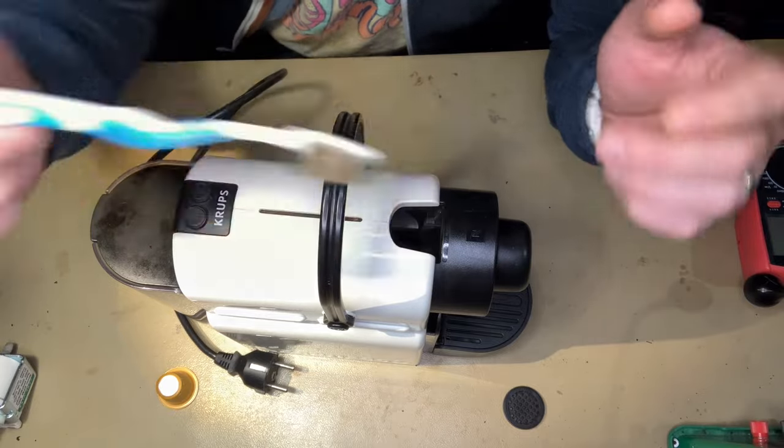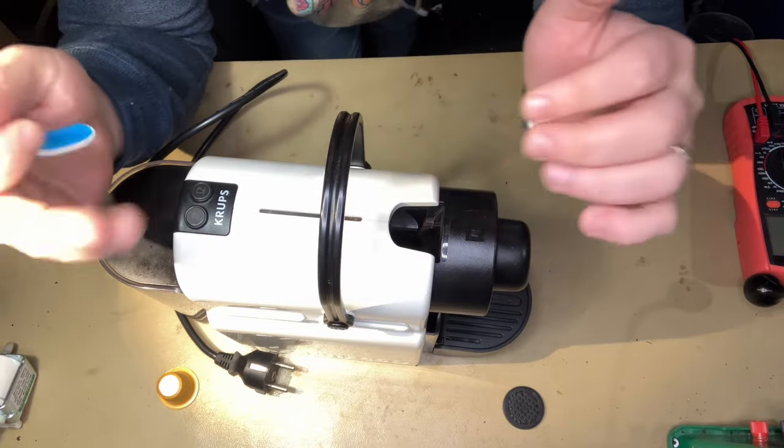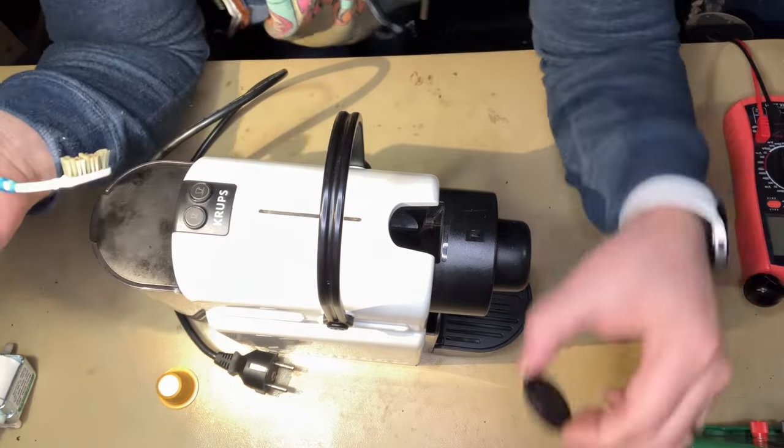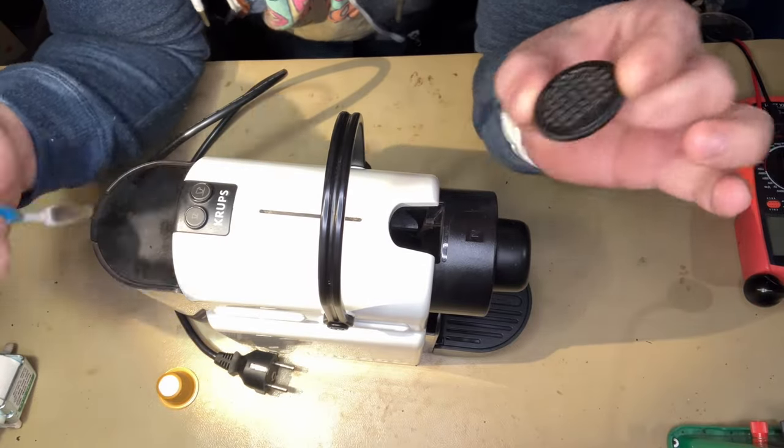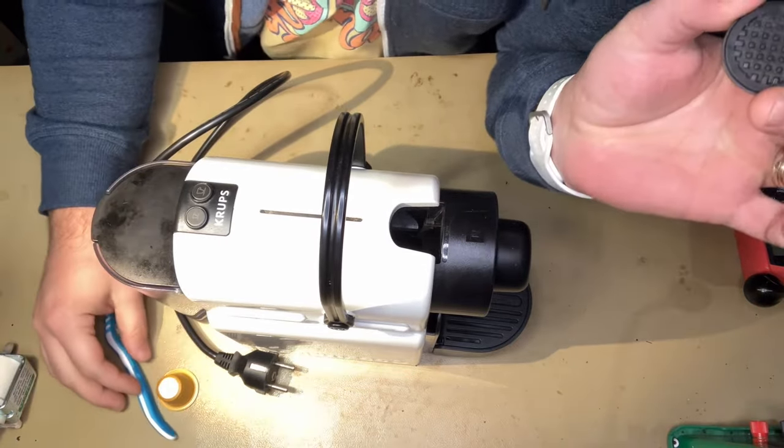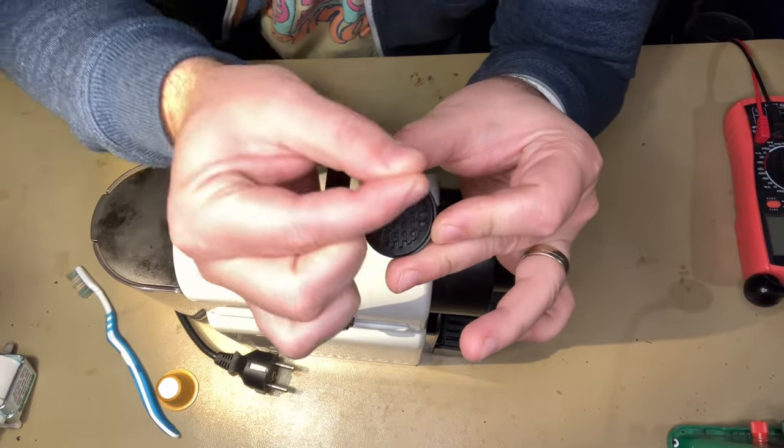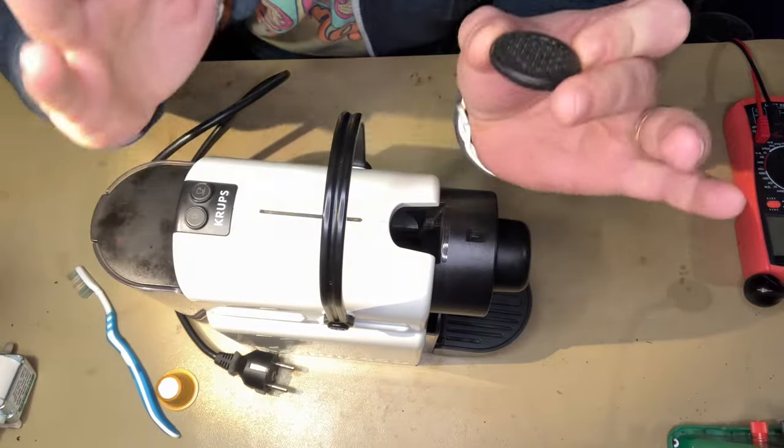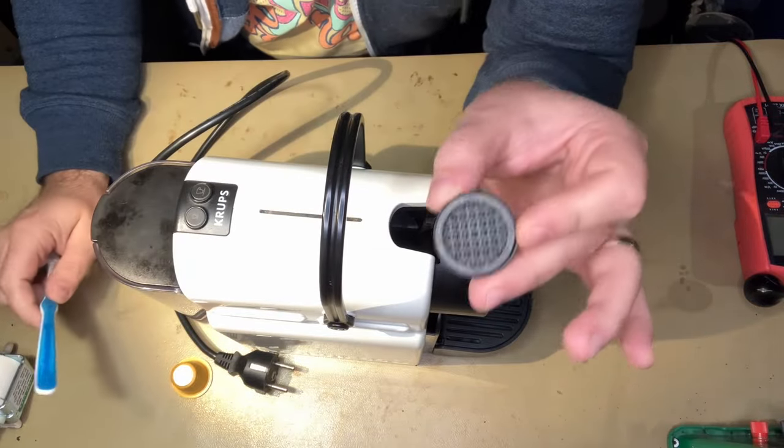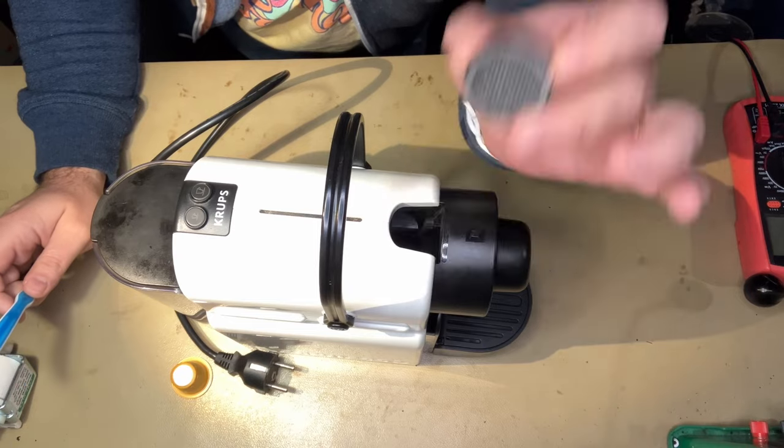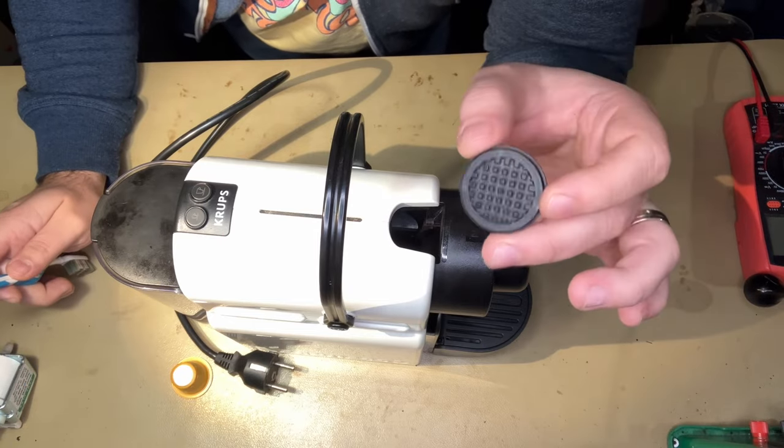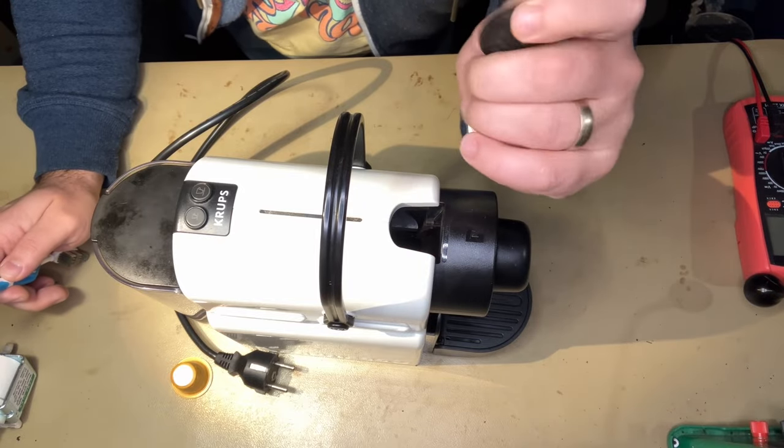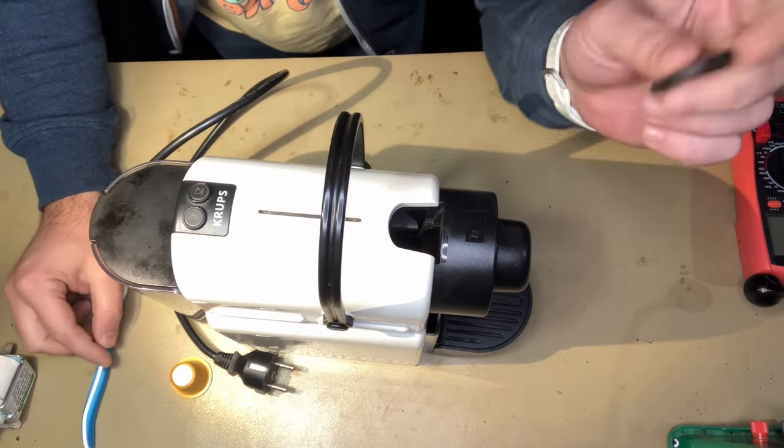Of course you can rely on other videos of mine where I disassemble these machines and take out this diffusion plate and with a small needle pinch every hole on this one. But as I said, make this only as a last resort. Start easy and then go to the hardest part.